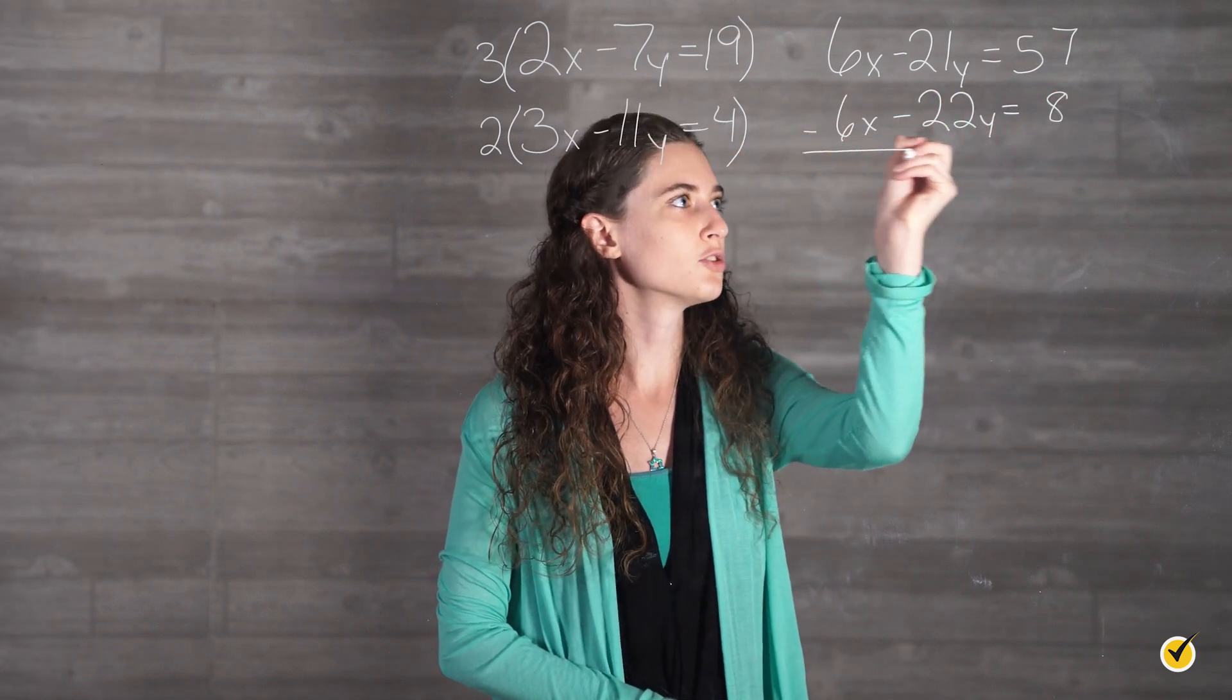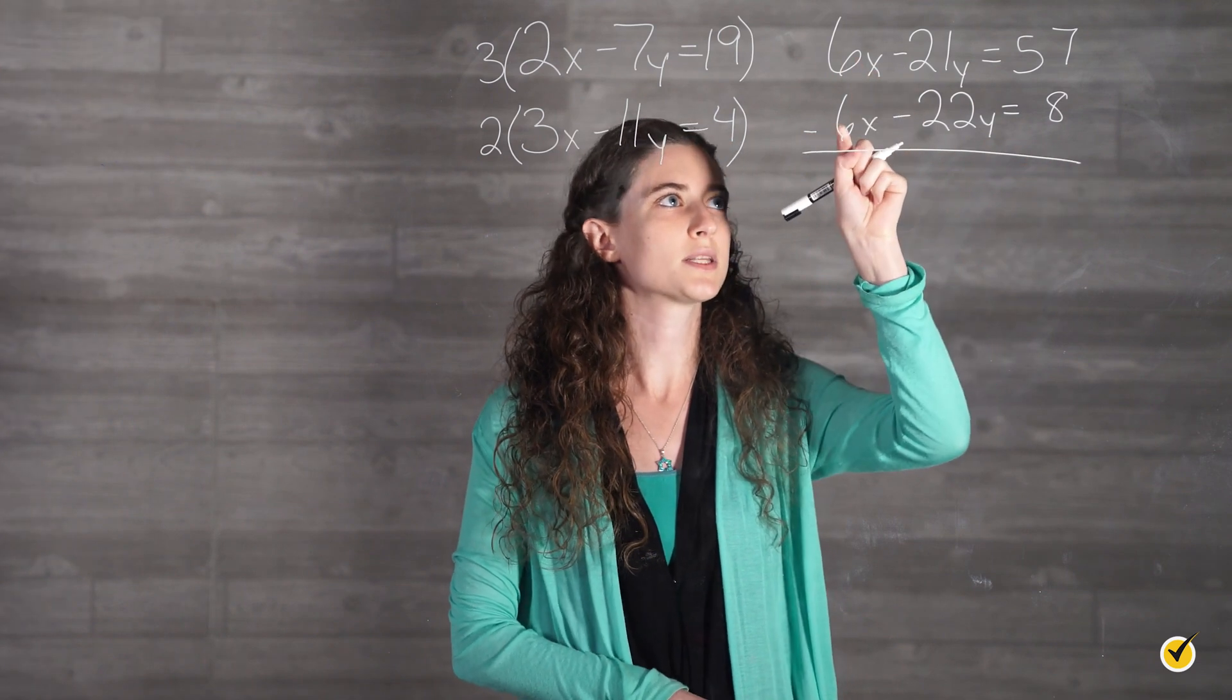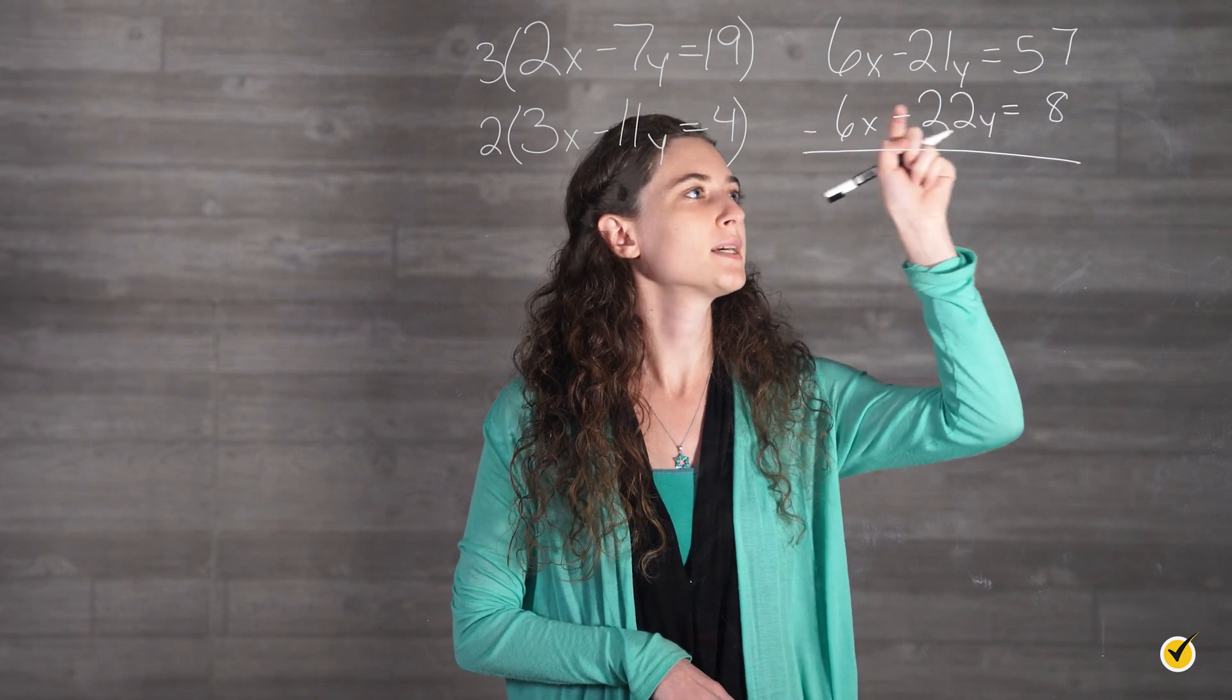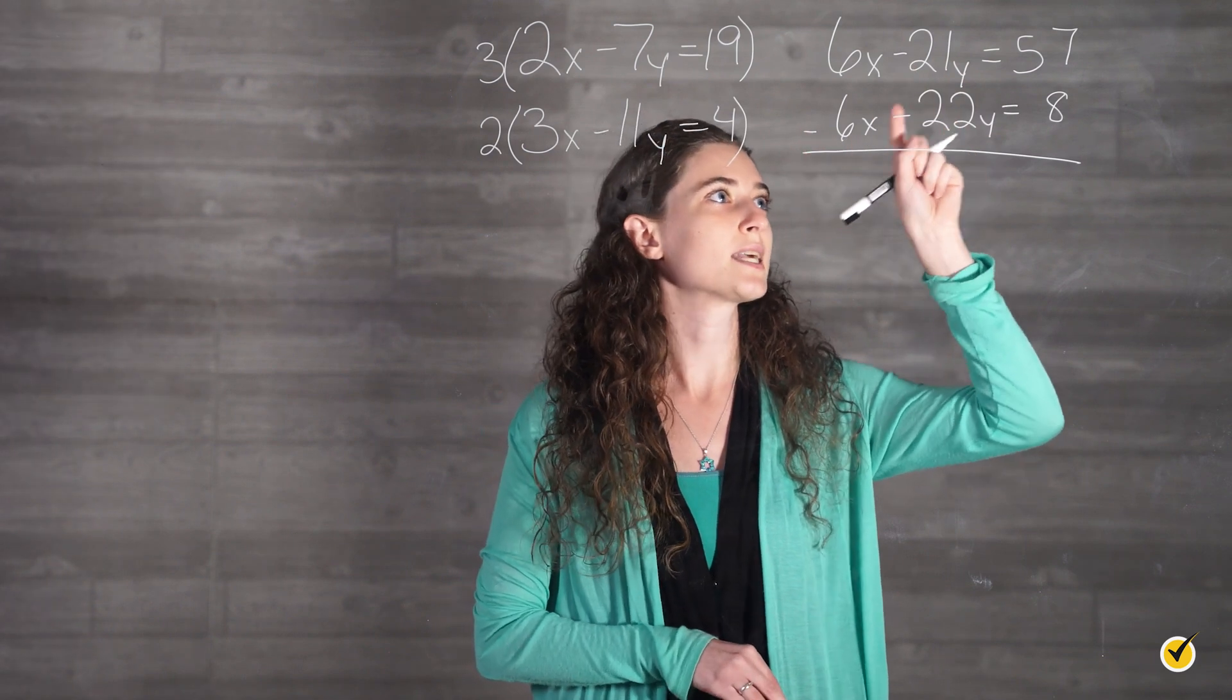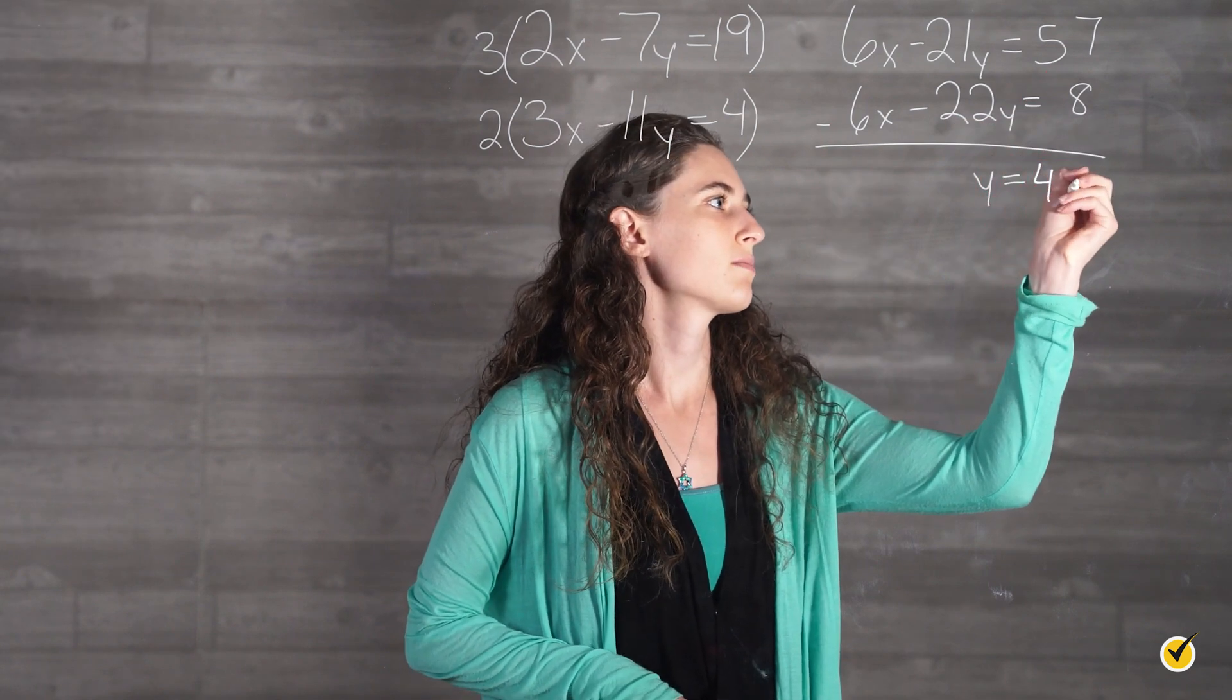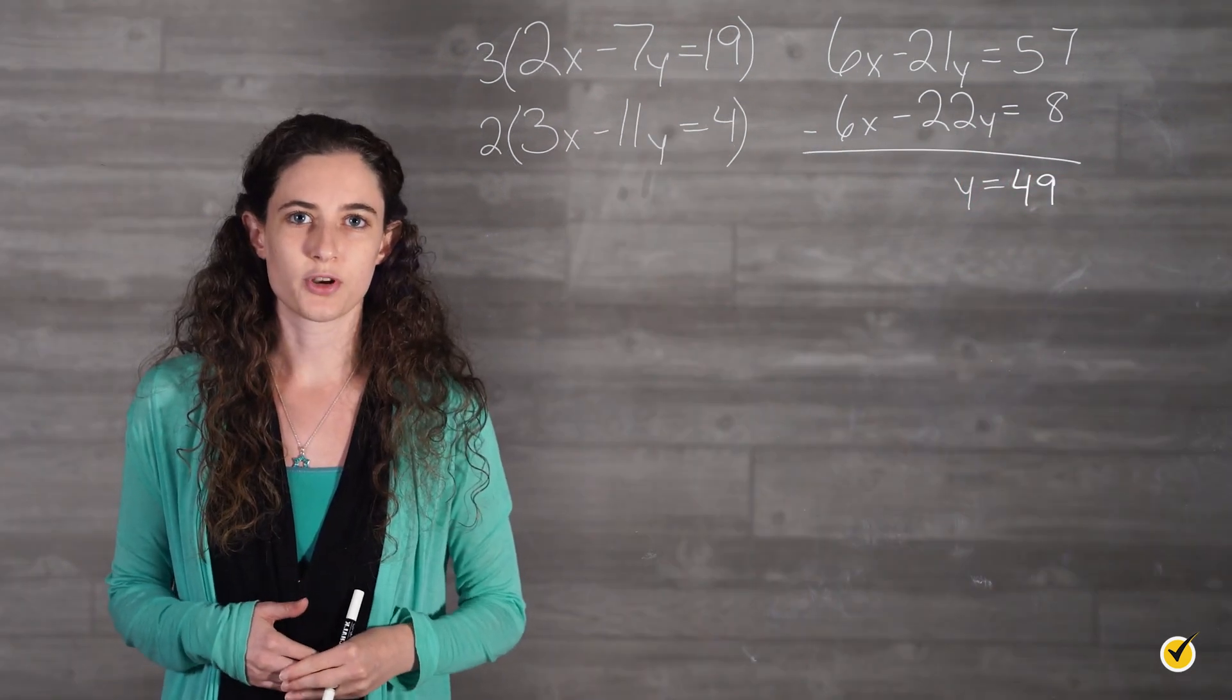Now we subtract our two equations so that we have 6x minus 6x equals 0. And then negative 21y minus negative 22y is like adding that 22y. Now we do 57 minus 8 which is 49. This tells us that y is equal to 49.